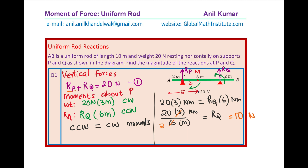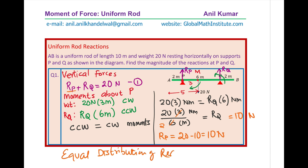From there, we can find RP. RP will be 20 minus 10, which is also 10 newtons. So when we have a uniform distribution and equally placed supports, you expect equally distributed reactions. We found that RP equals RQ, and both equal 10 newtons in this particular case.